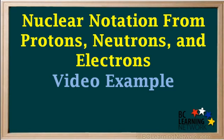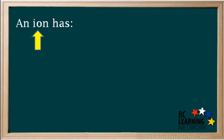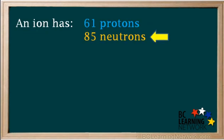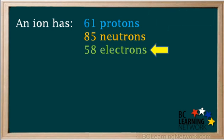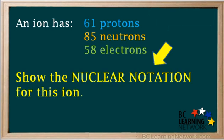This example will show you how to write the nuclear notation for an ion given the number of protons, neutrons, and electrons. An ion has 61 protons, 85 neutrons, and 58 electrons. Show the nuclear notation for this ion.